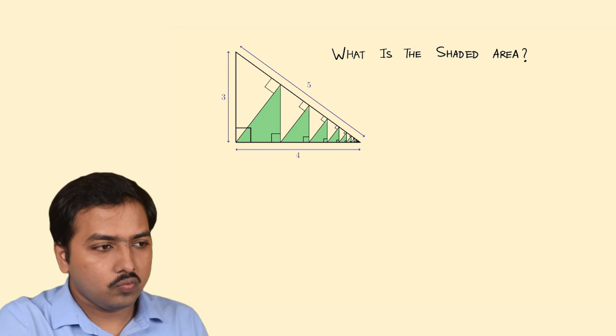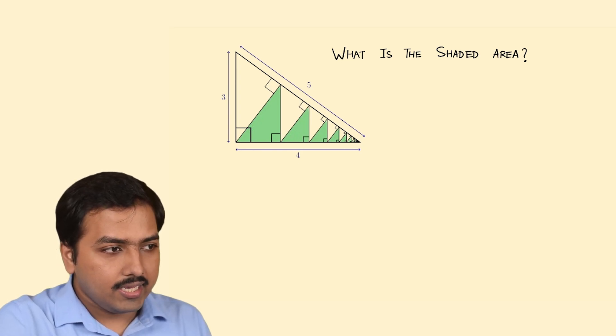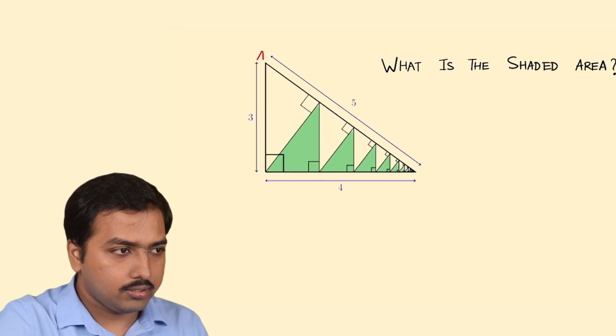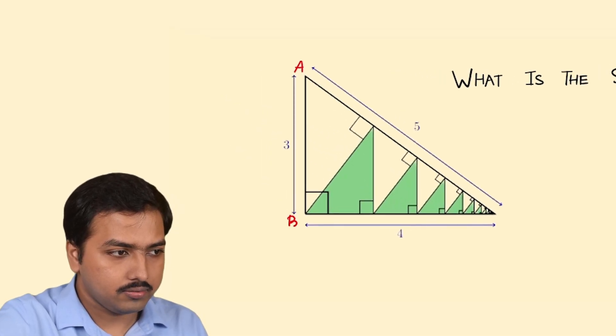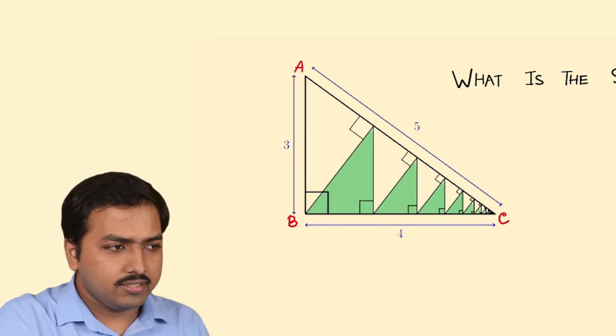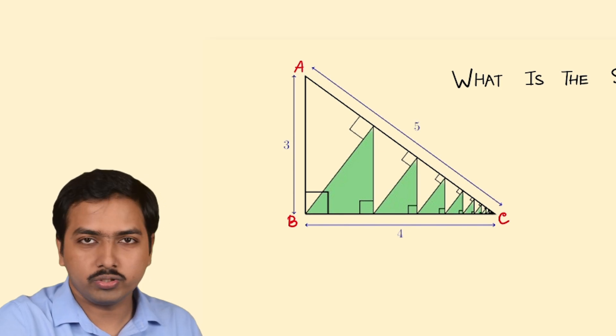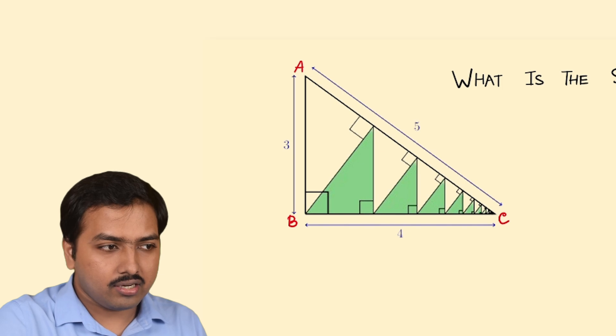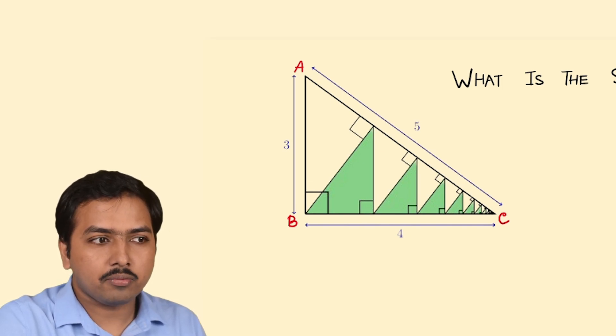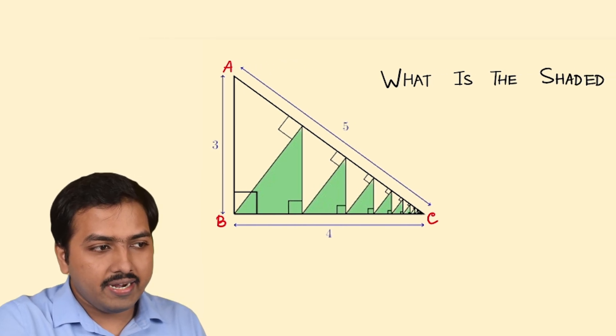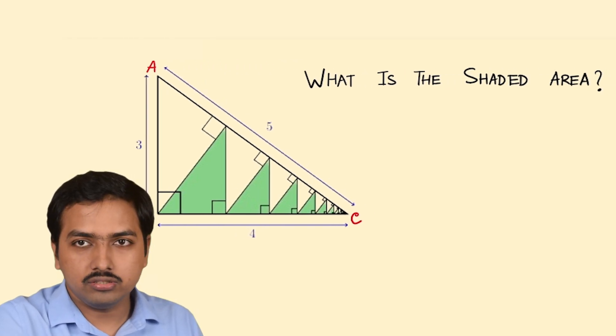So here is a problem where it is given this triangle. Let's name the triangle ABC. The triangle ABC is a right angle triangle and it's a 345 right angle triangle. So one of the most known right angle triangles and these green triangles are drawn within it for infinite number of times that was given. Now the question is what is the area of the shaded region, the green region?